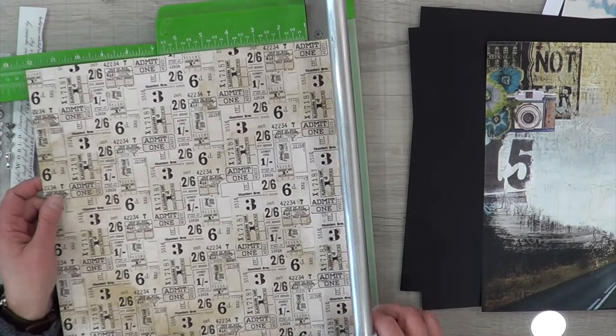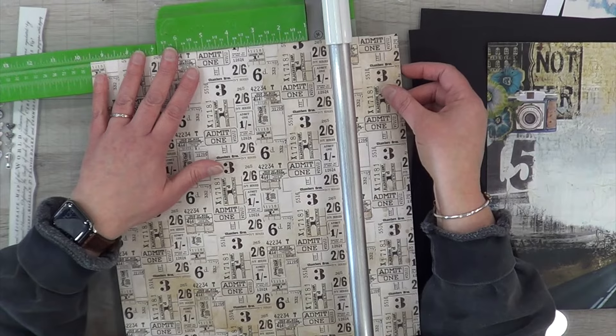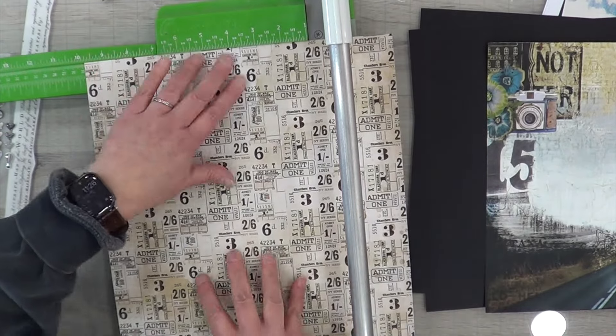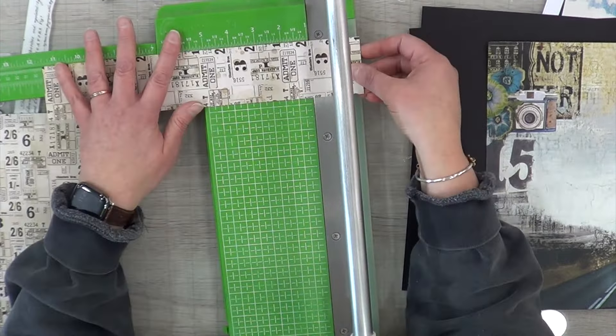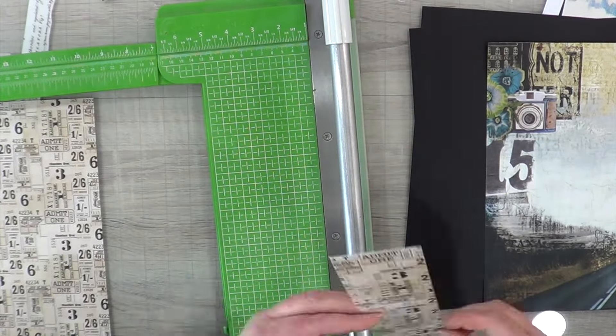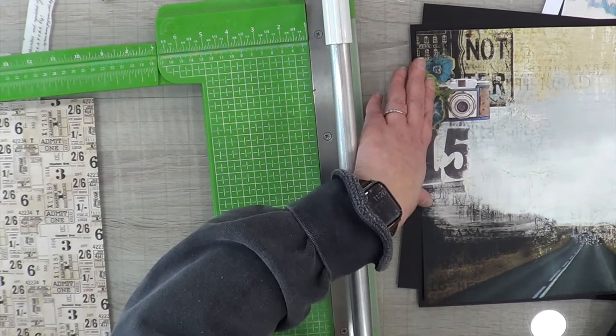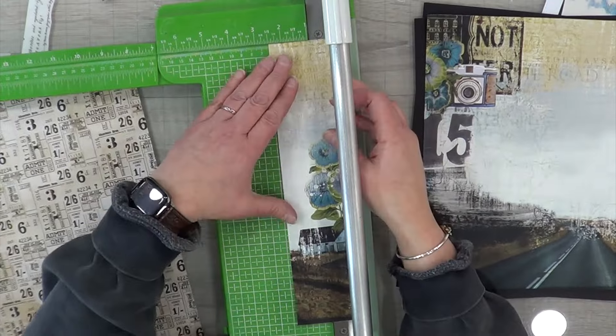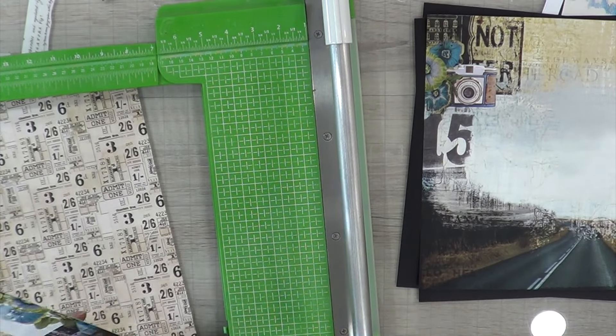And then I went ahead and cut off I want to say about two and a quarter, maybe two and a half inches from that road portion so that way the whole road is all on one side of my design. I did not want to cut my road in half, and then I did the same thing with the ticketed paper.